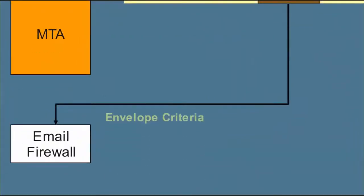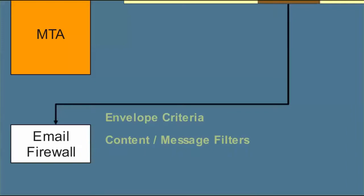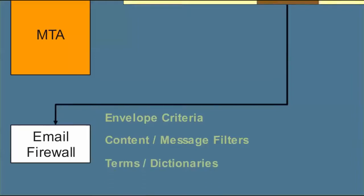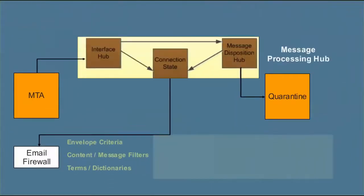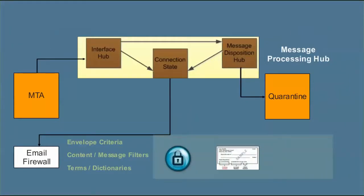The envelope criteria includes sender and recipient information, such as email address, domain, and IP address. Content filters can act on messages based on their content, like adult language and attachments. Message attribute filters can act on various message attributes like attachments. Terms in dictionaries include the identification of credit card numbers, ABA routing numbers, HIPAA, and other sensitive information. You can also create specialized dictionaries containing terms specific to your company.